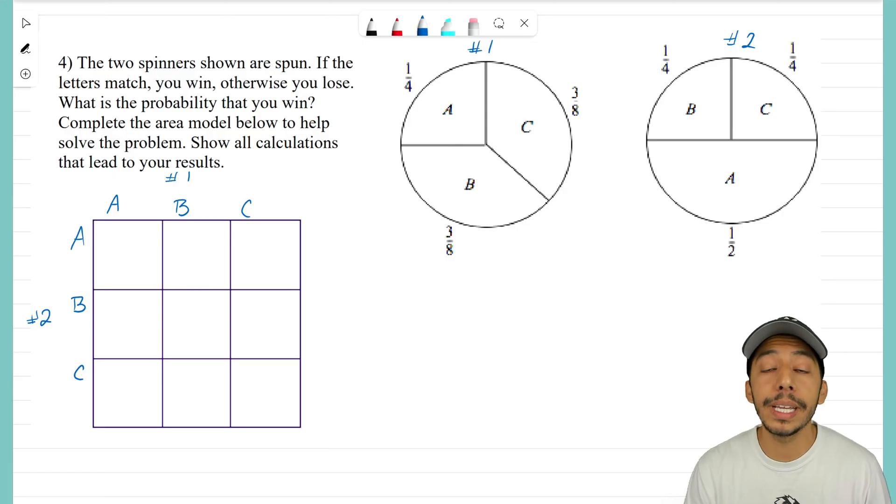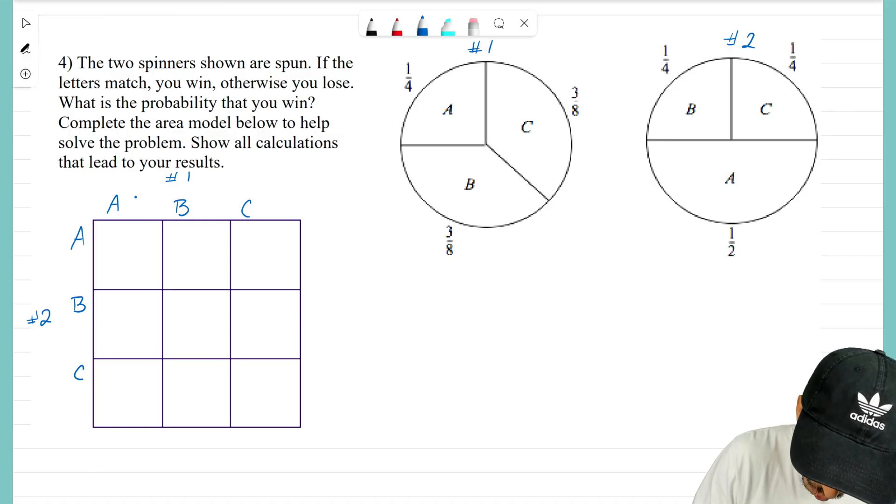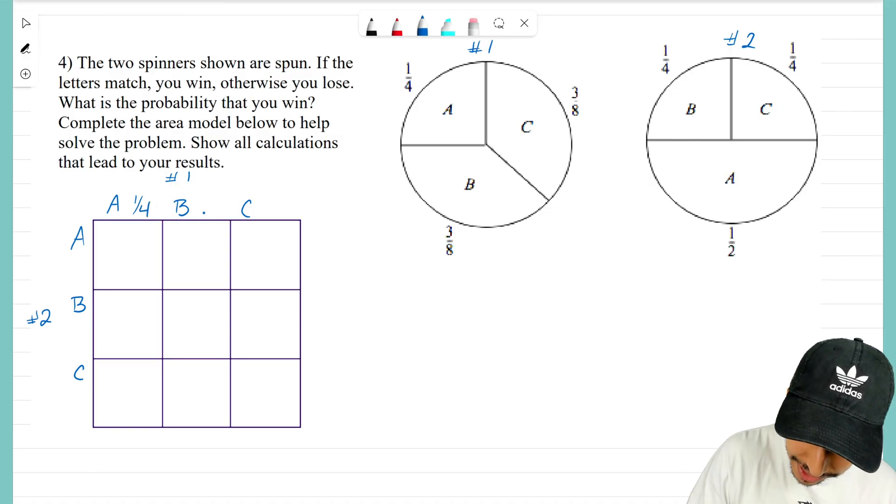So for spinner number one, what is the chance of getting an A? Well, I look at spinner number one and it tells me that the chance of getting an A is one-fourth. B has a chance of three over eight, and C also has a chance of three over eight. Perfect.